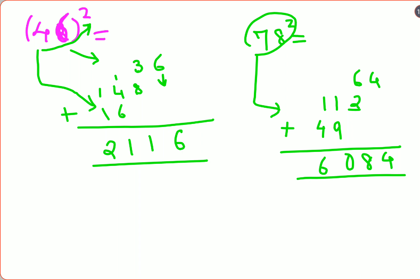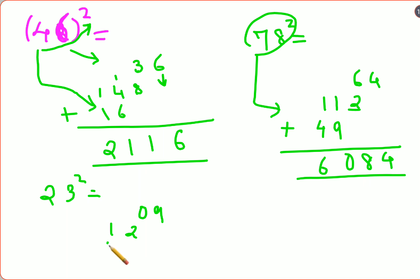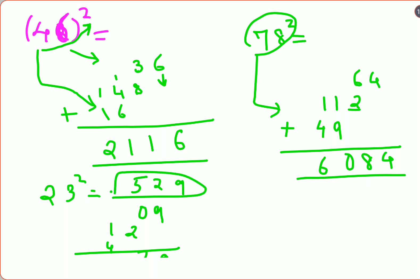Let's try 23 squared. Write 3 squared as 09 in two-digit form. Then 2 times 3 times 2 equals 12. Then 2 squared is 4. Adding them up gives 529.